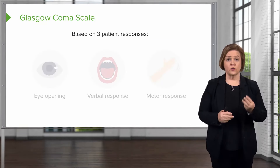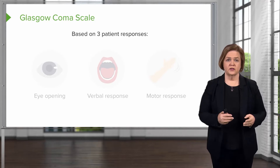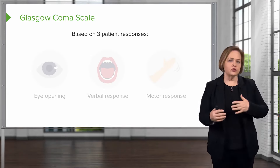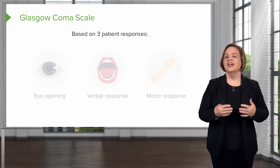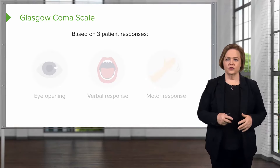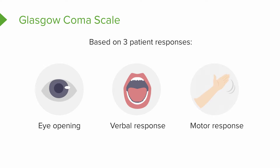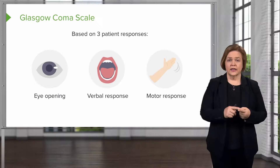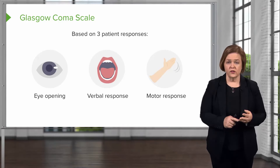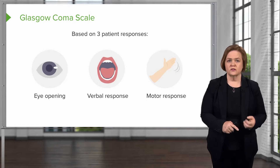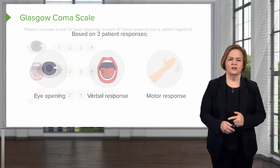The Glasgow Coma Scale is based on three patient responses. This is kind of fun because you can practice this on your roommate or one of your friends and see what their Glasgow Coma Scale would be. The three patient responses are eye opening, verbal response, and motor response. A helpful way to remember this: Glasgow Coma Scale has three words, and we're looking at the eyes, the mouth, and the motor response.